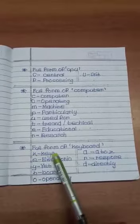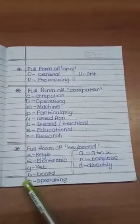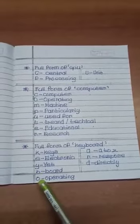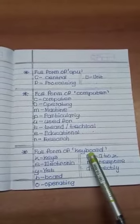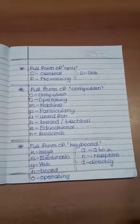Full form of keyboard. K means keys, E means electronic, Y means yet, B means board, O means operating, A means A to Z, R means response, D means directly.